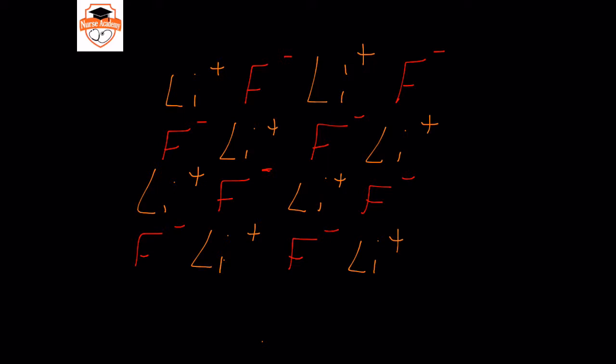An example of a common ionic compound is table salt. Table salt is sodium chloride, and while it has a fairly high melting point — you can put your salt in a frying pan and it will not melt — it is very easy to crush. Some of these bonds between ions can be quite easily broken.